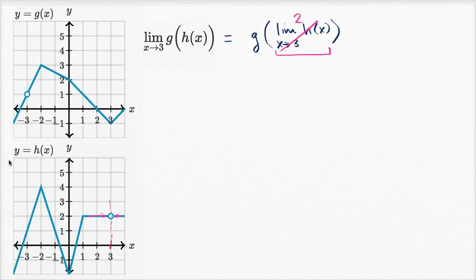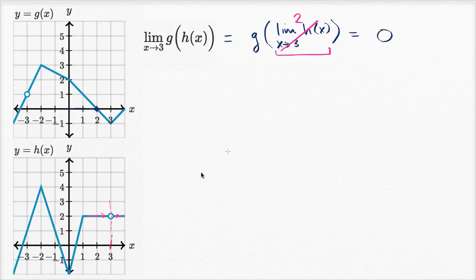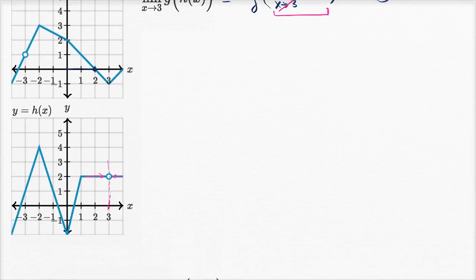This all simplifies to g of two. Now what is g of two? Looking at this function, when x is two, g of two is zero. So this is going to be zero, and we're done. Let's do a few more of these.